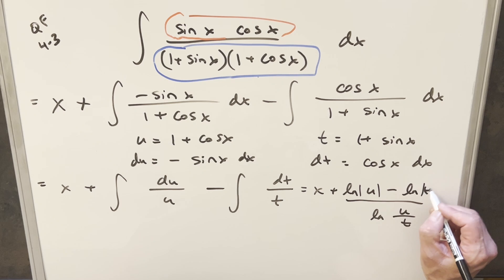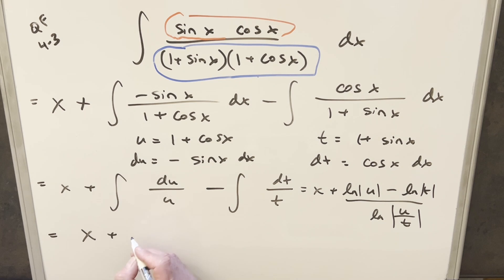We can put absolute value on there. So we can write it like this. So when I do this, for my final solution, we're going to have just x plus natural log 1 plus cosine x over 1 plus sine x.